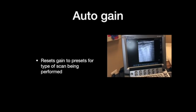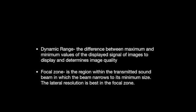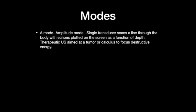Autogain resets the gain to presets for the type of scan being performed. Here's where the autogain is located on the ultrasound machine, and here's what it looks like with the previous presets visible. Dynamic range is the difference between the maximum and minimum values of the displayed signal, used to determine image quality. Focal zone is a region within the transmitted beam in which the beam narrows to its minimum size — lateral resolution is best in the focal zone. The M mode, or amplitude mode, has a signal transducer that scans a line through the body with echoes plotted as a function of depth. Therapeutic ultrasound can also be aimed at tumors or calculus to focus destructive energy.